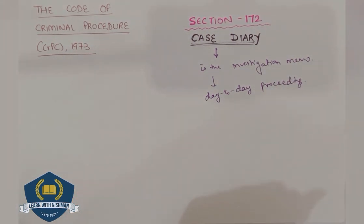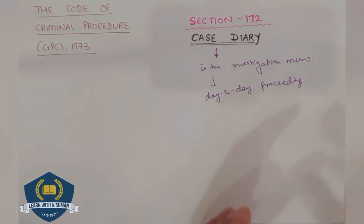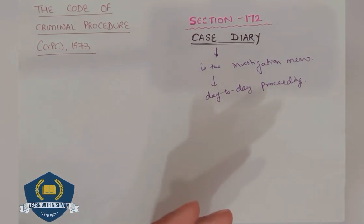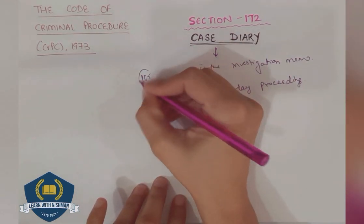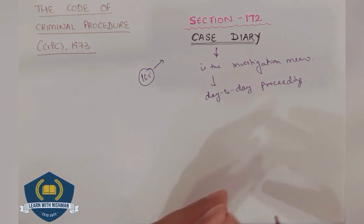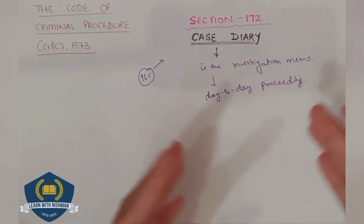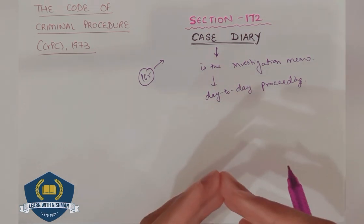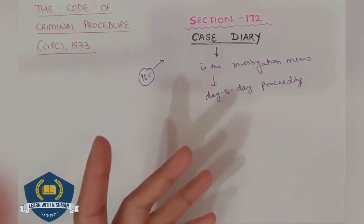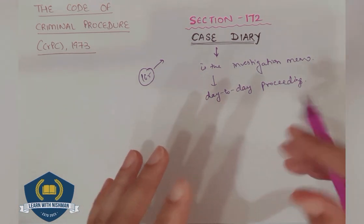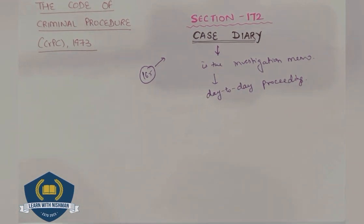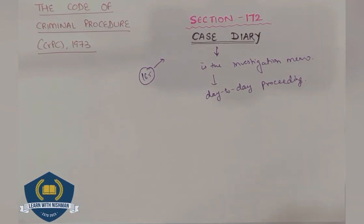The magistrate gets an idea of what investigation has been done through the Case Diary. The Case Diary is a previous statement made by the police officer to the court. The court has the power to ask questions under Section 165 regarding the Case Diary, and can summon persons whose names are written in it. If the court finds a contradiction, the opposite party gets the right to use that contradiction.